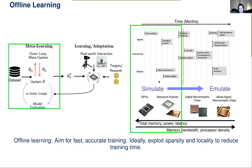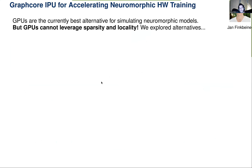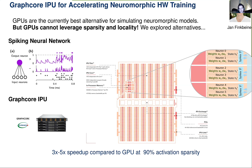In terms of the two stages: the offline stage runs in the computer — burning power in the cloud — but you want it fast and efficient so it can be deployed on low-power chips. GPUs can't really leverage sparsity and locality of spiking networks. My student Jan Finkbeiner has done great work using Intelligence Processing Units from Graphcore, which consist of thousands of processors with local memory that can leverage sparsity and locality. We're currently getting a 3-5x speed-up compared to the best GPUs at a reasonable sparsity level, iso-accuracy.